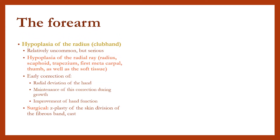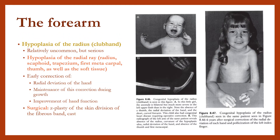The forearm: Hypoplasia of the radius is relatively uncommon but serious, involving hypoplasia of the radial ray. Treatment goals include early correction of radial deviation of the hand, maintaining correction during growth, and improving hand function. Surgical therapy involves Z-plasty of the skin, division of the fibrous band, and cast application.